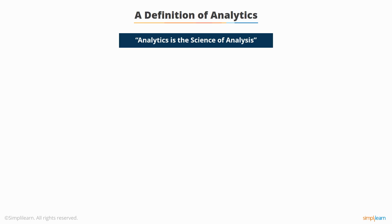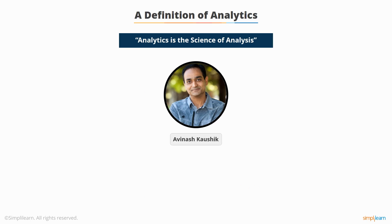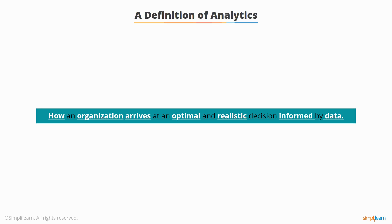So let's define what analytics is. Analytics is the science of analysis. There were different definitions from the Digital Analytics Association, Avinash Kaushik, and others, but the one I prefer is this: analytics is how an organization arrives at an optimal and realistic decision informed by data. What's nice about this definition is that we can clearly define each term and why it's important. An organization can be a private or publicly traded company, a startup or well-established organization, government, academic, profit or non-profit — even a subgroup within a larger company. We want to look at how this group can leverage data to make better informed decisions.